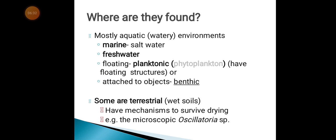Where are algae found? Most are aquatic — meaning related to water. They can be found in marine environments, which means salt water, or in fresh waters. Some of them are floating or planktonic.